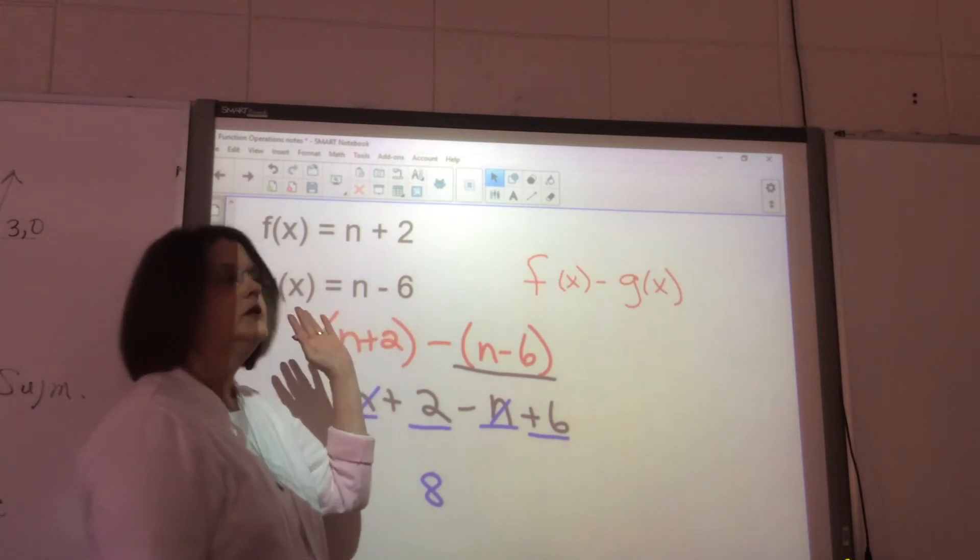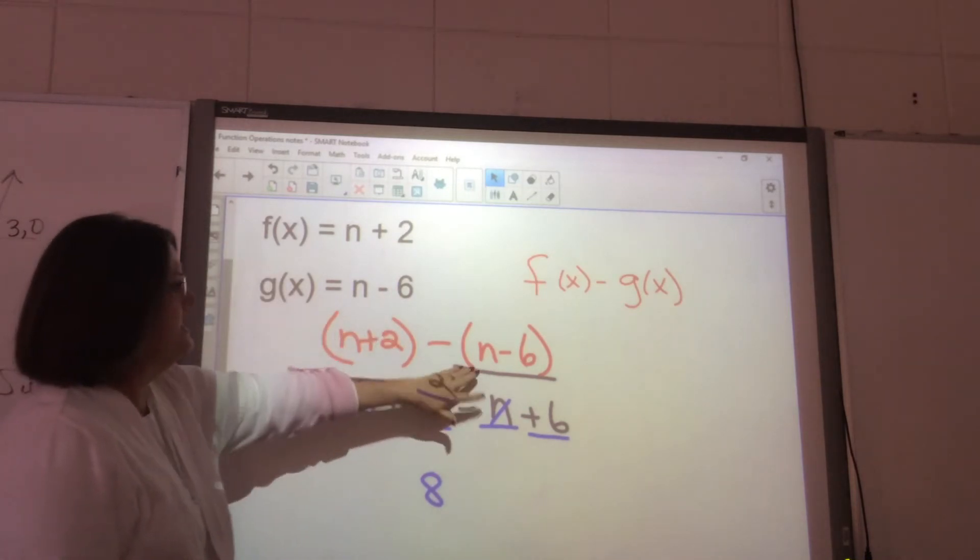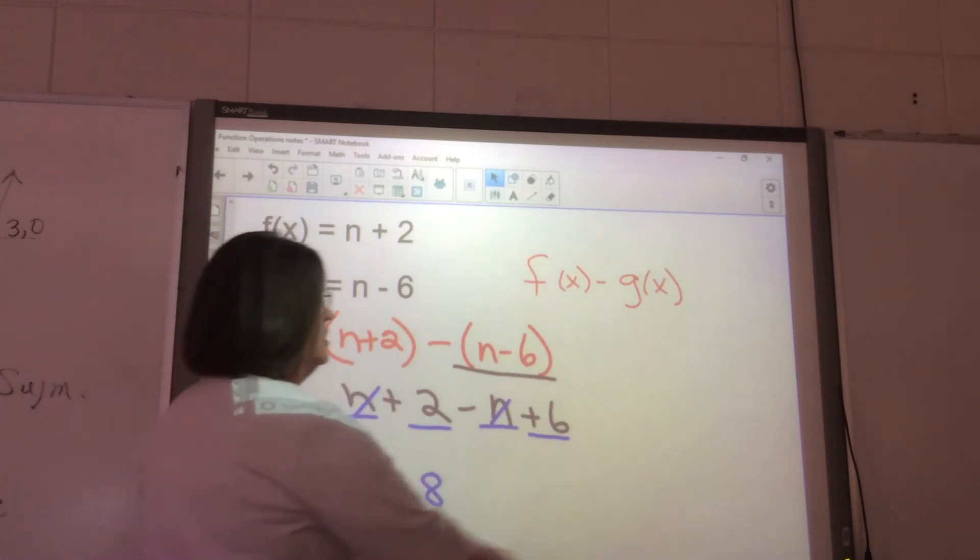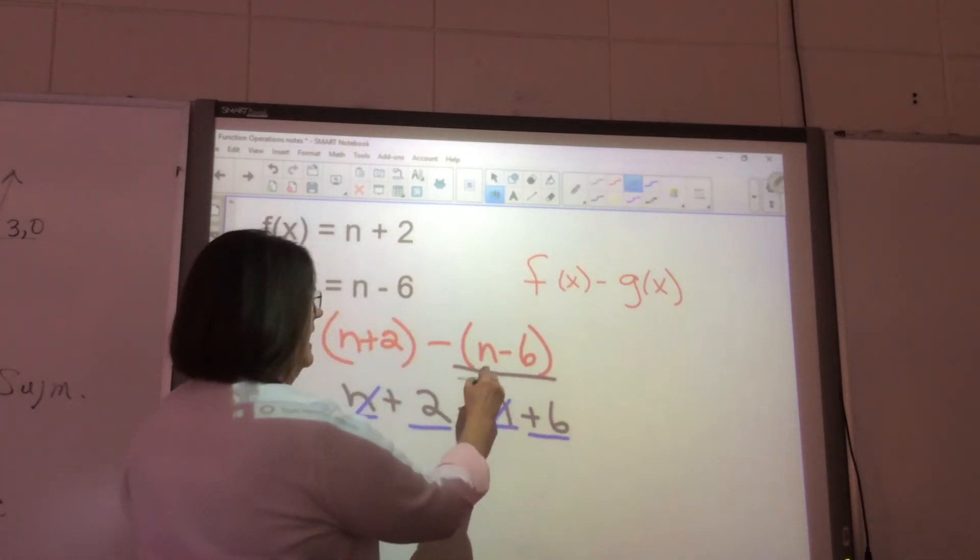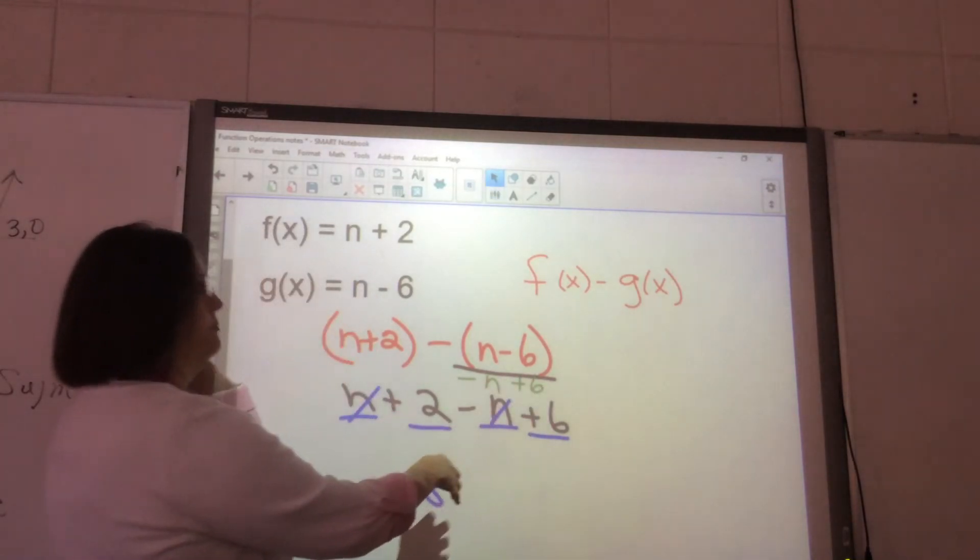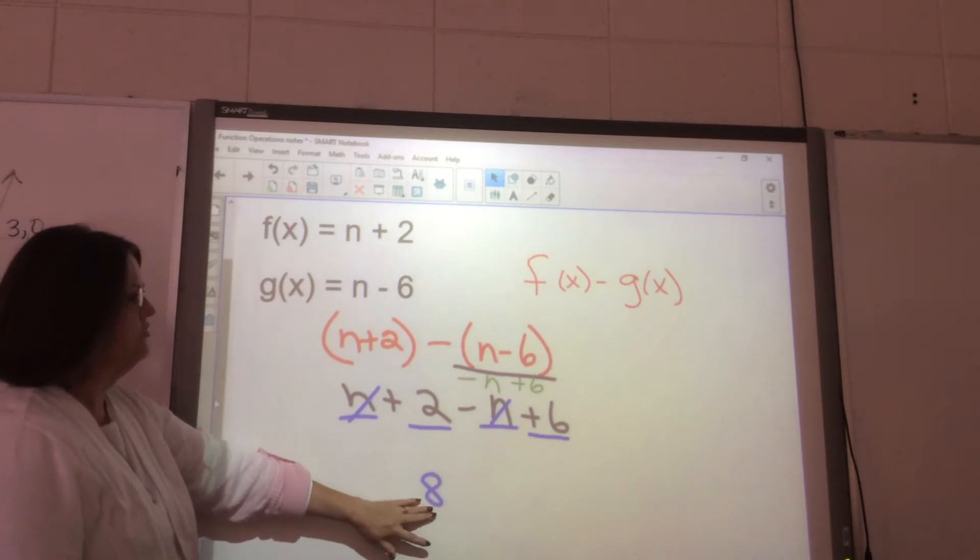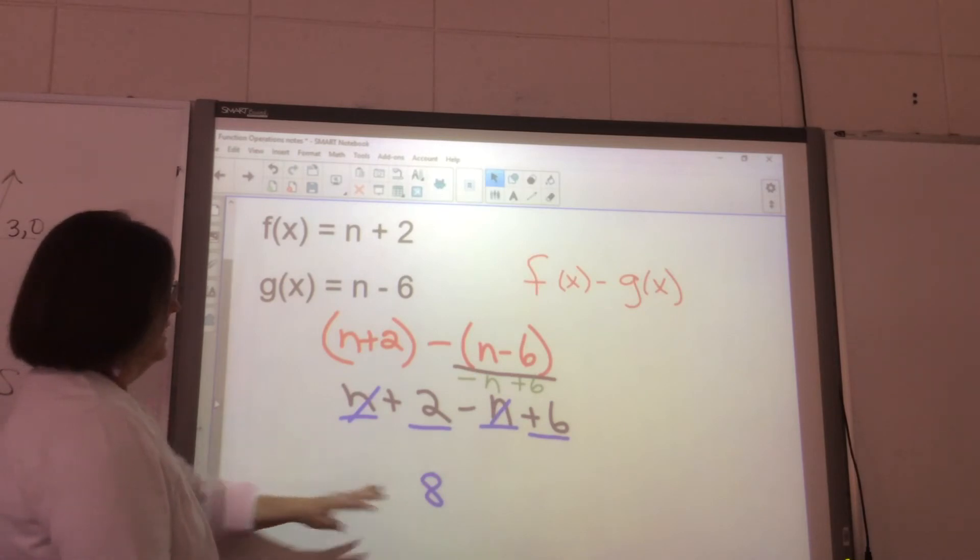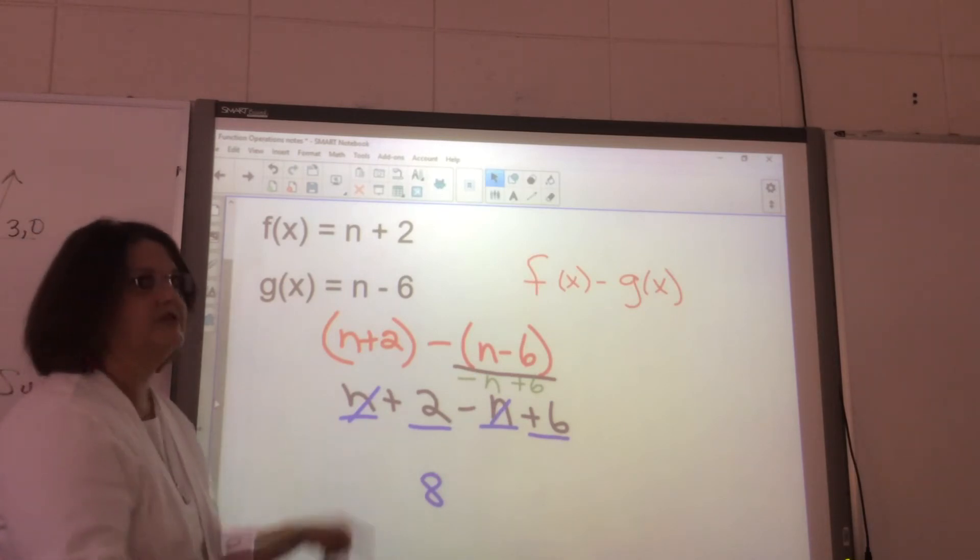You want to make this negative n and this positive 6, and then put them together—put like terms together like you used to. In this particular problem, the n's cancel out, but that's all you do: add like terms after you change the sign. That's going to be where you make your error if you make one.